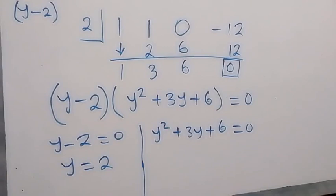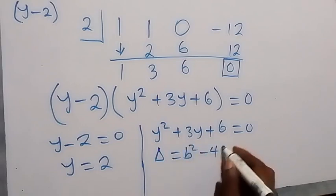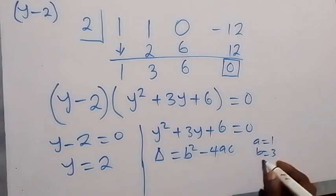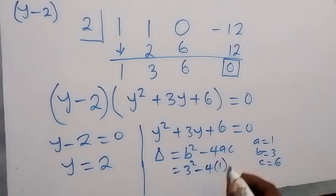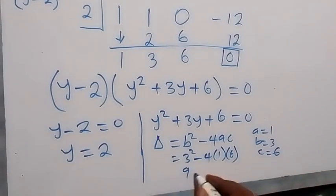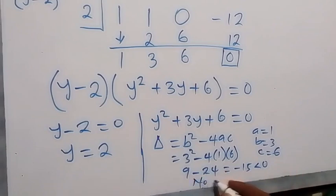Let's check whether y squared plus 3y plus 6 equals 0 gives real solutions using the discriminant b squared minus 4ac. Here a equals 1, b equals 3, c equals 6. So b squared minus 4ac equals 9 minus 24, which is negative 15, less than 0. There are no real solutions from this factor.